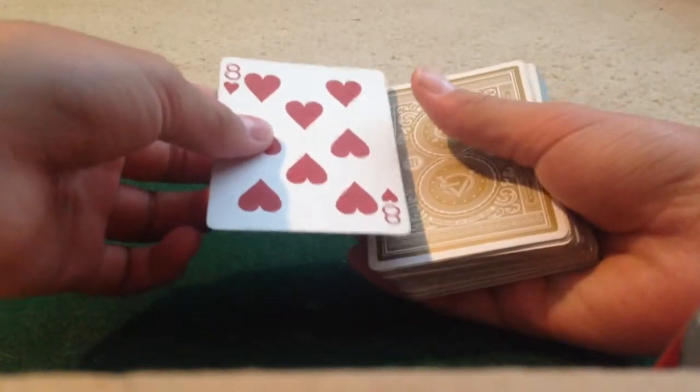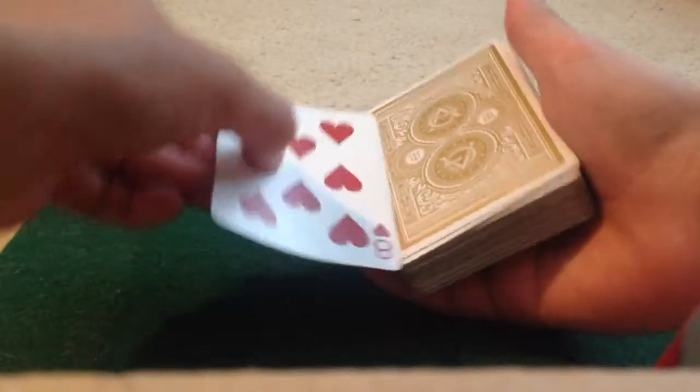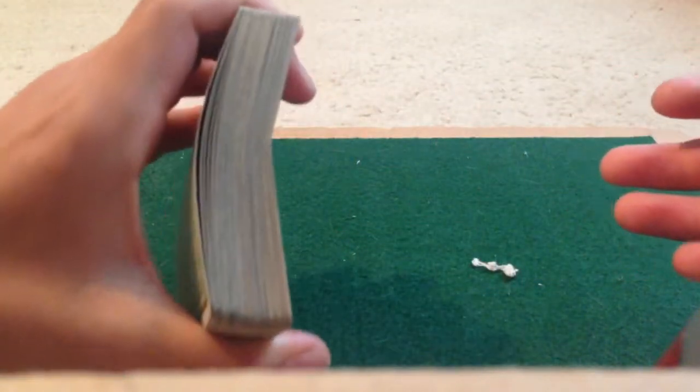Once the spectator's card is at the top of the pack, you're going to crimp the cards. While you're talking, just bend the deck like that really quickly. Don't just hold it and keep doing it. Just do it really quickly so you have a nice bend.